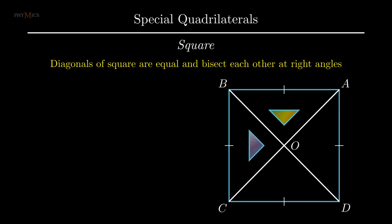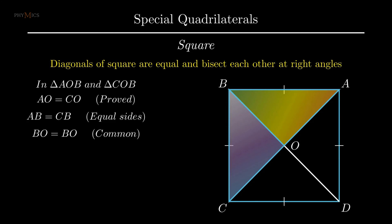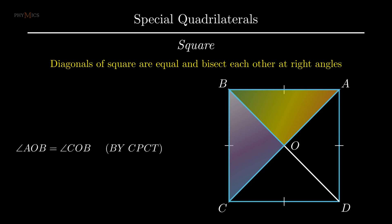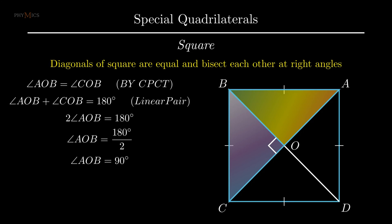To prove diagonals bisect each other at 90 degrees, consider triangle AOB and triangle COB. Since segment AO equals segment CO, side AB equals side CB as sides of the square are equal, and BO is the common segment to both triangles. Therefore by side-side-side rule, triangle AOB is congruent to triangle COB. By corresponding parts of congruent triangles, angle AOB equals angle COB. Since the sum of angle AOB and angle COB forms a linear pair equal to 180 degrees, this gives twice angle AOB equals 180 degrees, so angle AOB equals 90 degrees. Hence diagonals of a square are equal and bisect each other at right angles.